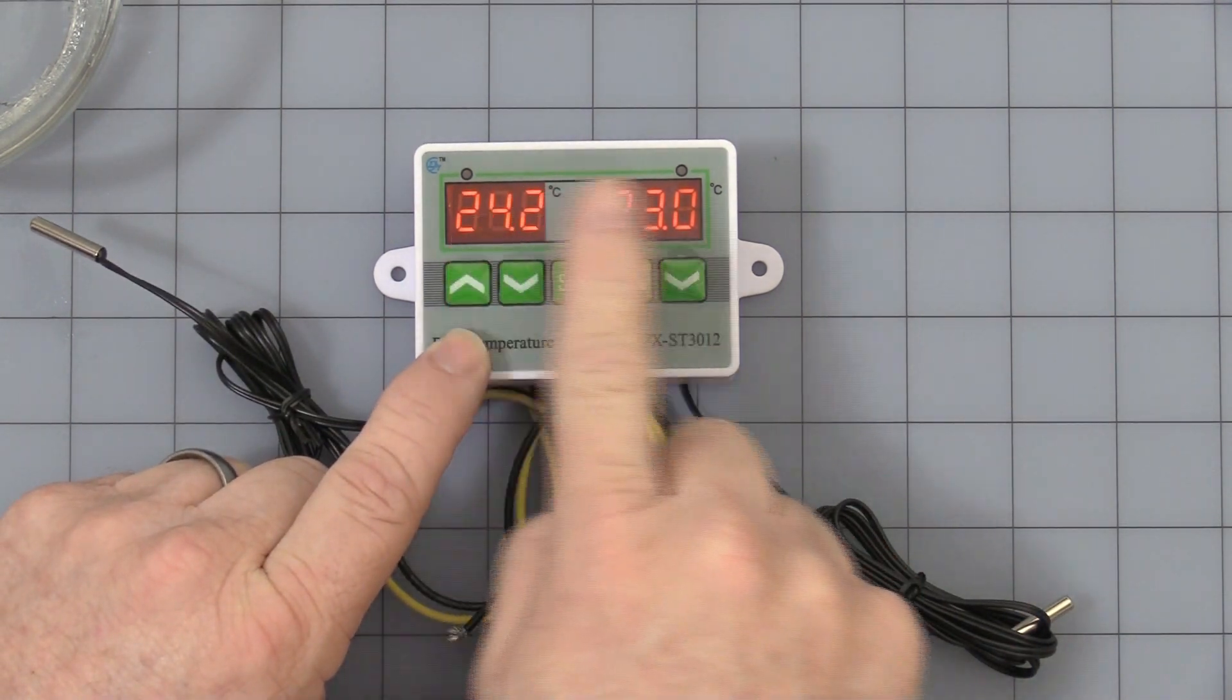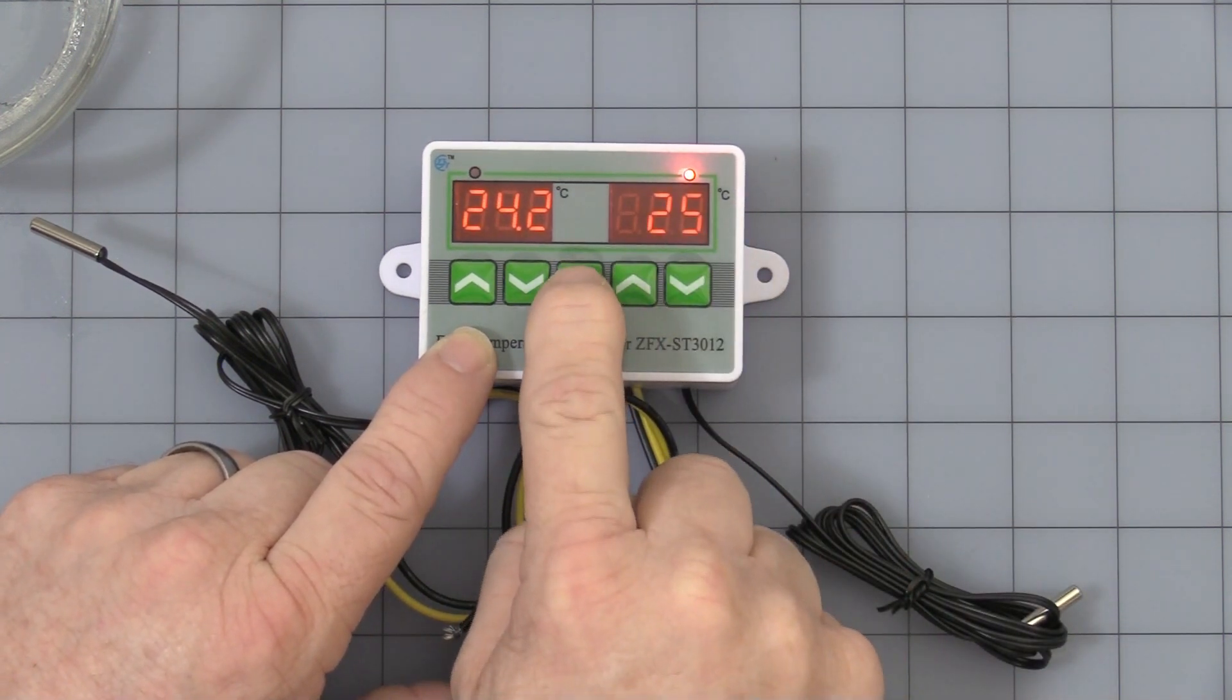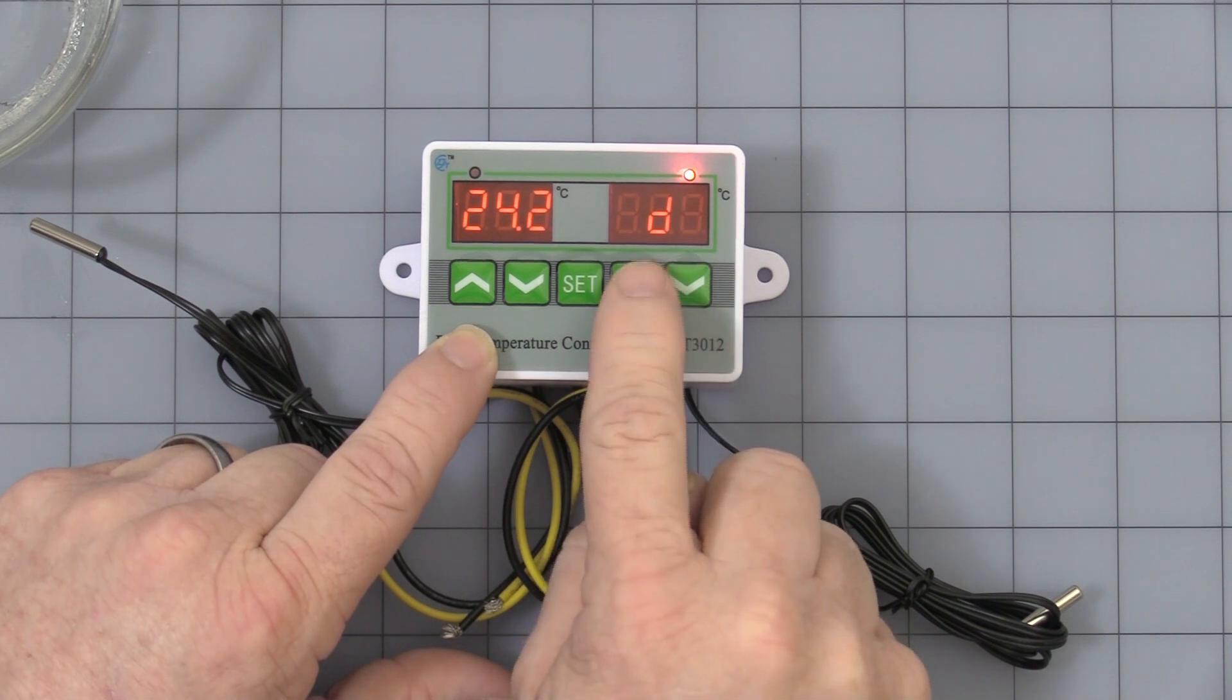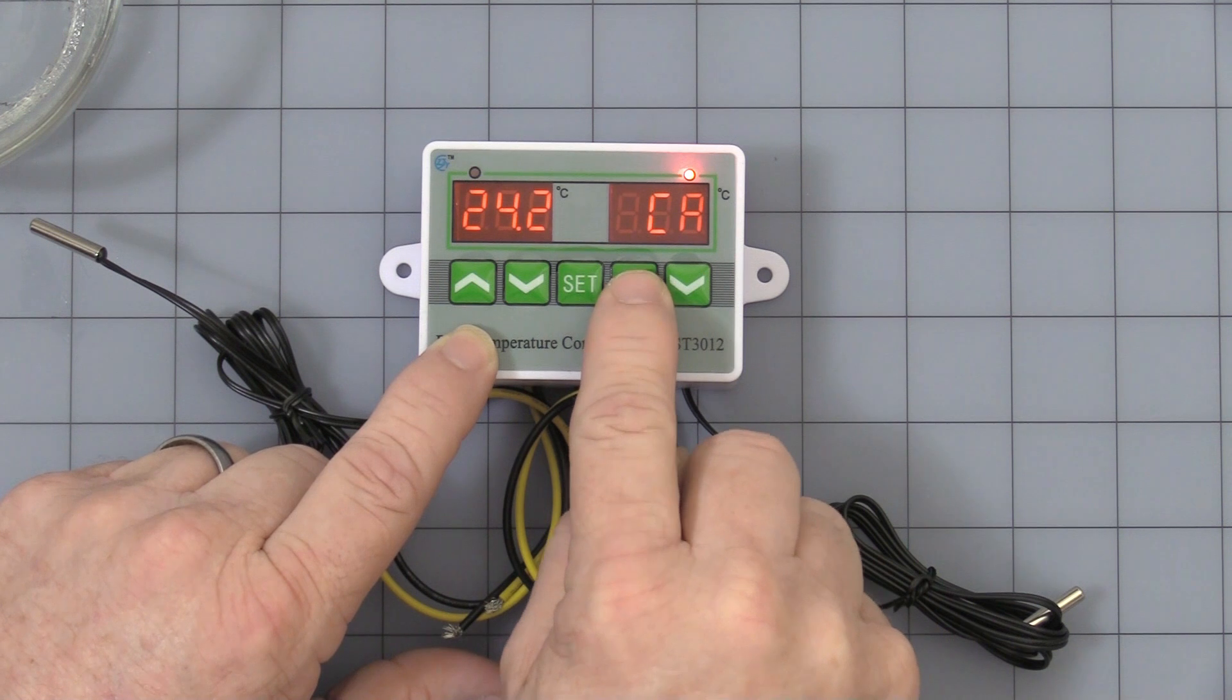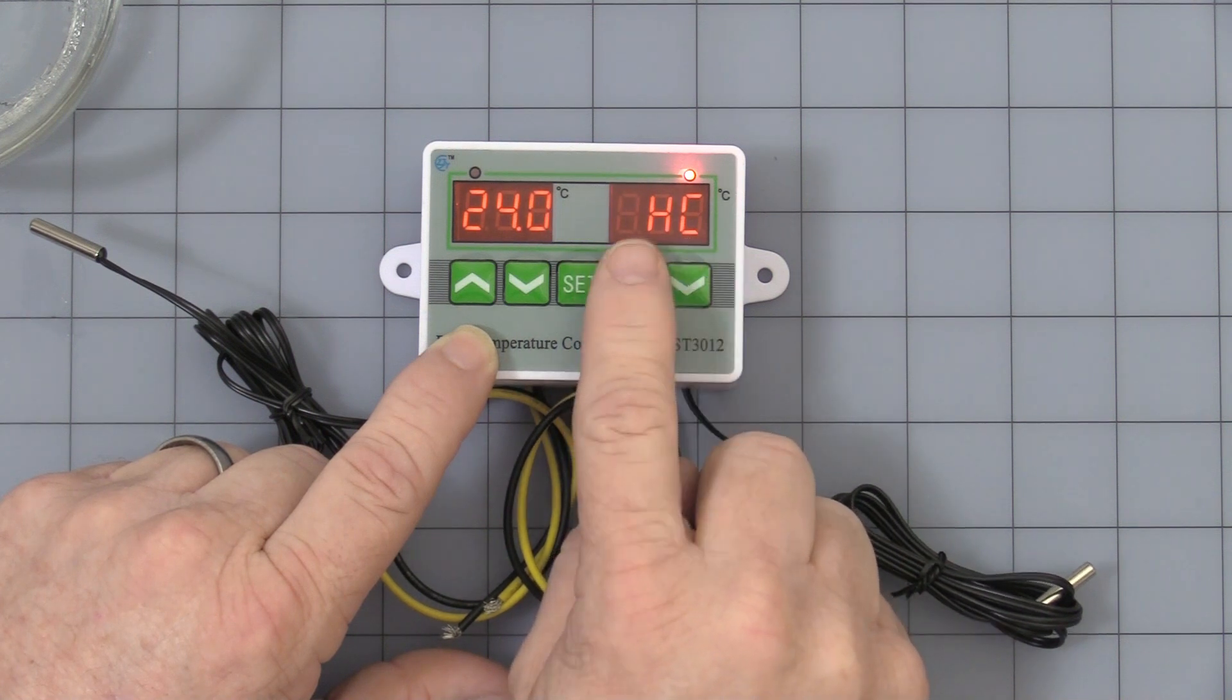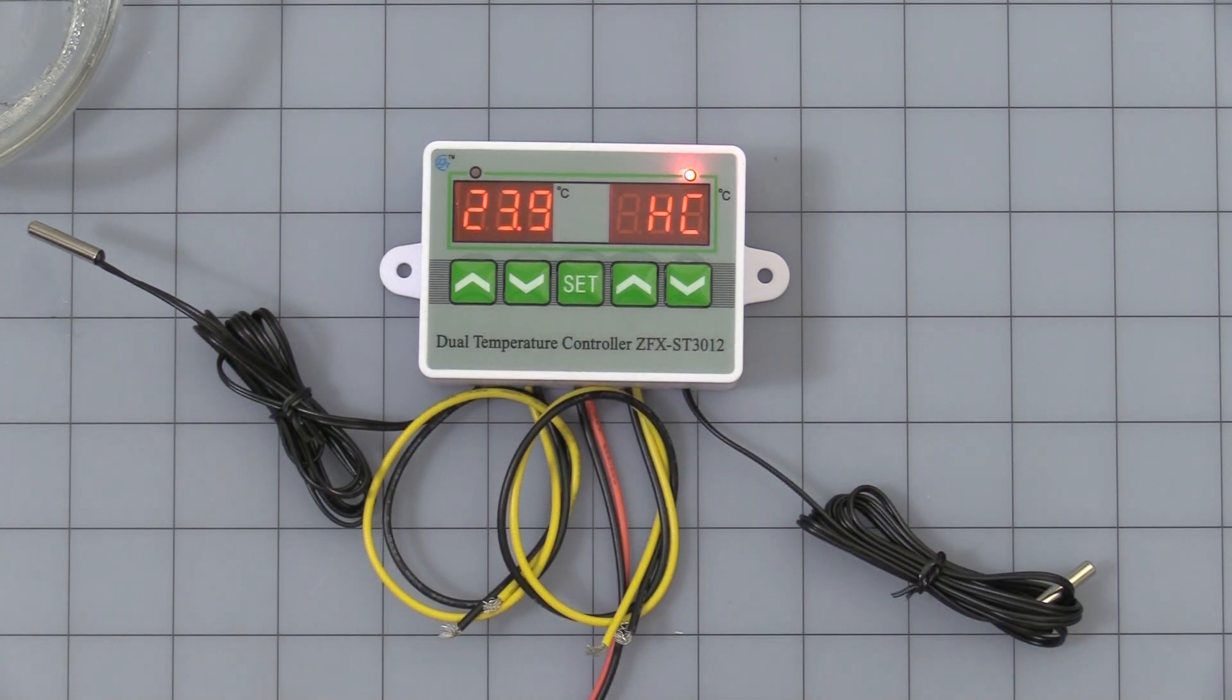Same exact thing works for this side, works for this side. Press it once, it's flashing. Now when it's flashing on this side, you press and hold, and you have all the same programming. There's hysteresis, there's a low temperature alarm, high temperature alarm, calibration, the same power on delay, and back over to heating or cooling. This is factory set to cooling also. When you leave it alone, it goes back to normal operation.